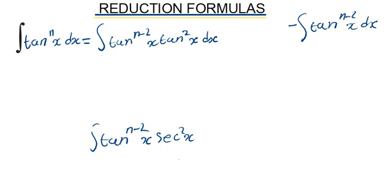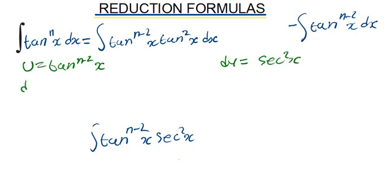We're going to use integration by parts for the remaining integral. So we let u = tan^(n-2)(x), and let dv = sec²(x) dx. That means du equals (n-2) — we've dropped the power — times the derivative of tan(x), which is sec²(x), times tan^(n-3)(x) dx.